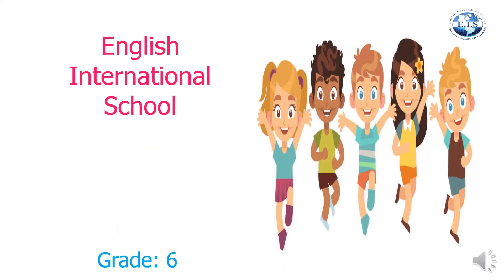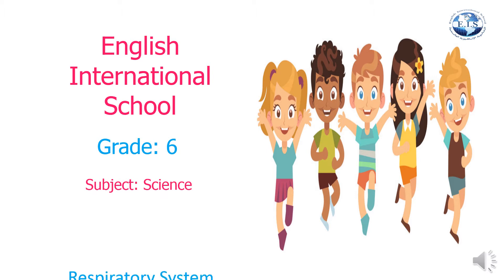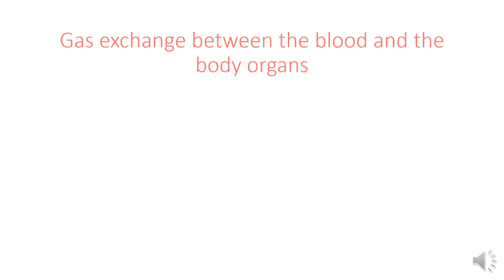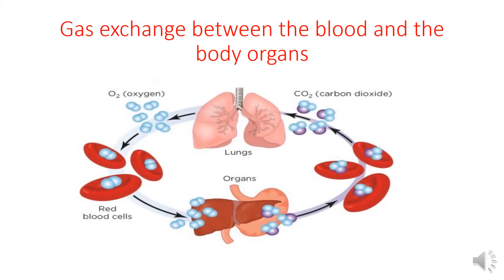Dear sixth graders, we are going to continue the science lesson on the respiratory system — specifically, gas exchange between the blood and the body organs. First of all, we should know that a blood vessel carries blood through the whole body. This is a blood vessel, and this is another blood vessel. The inhaled air enters the lungs rich in oxygen gas.